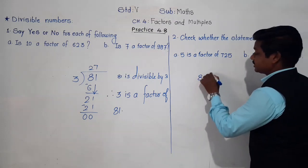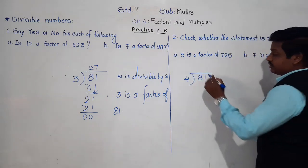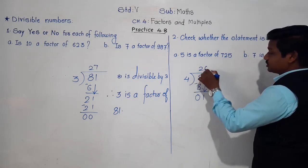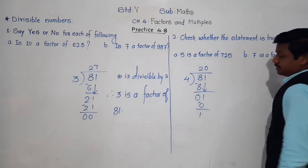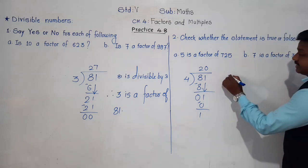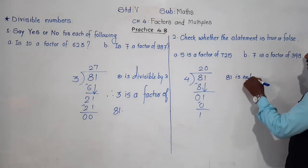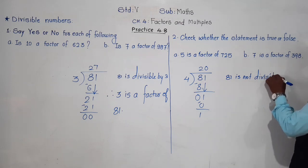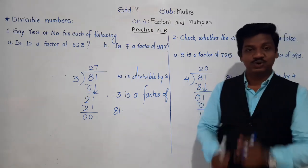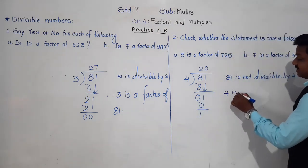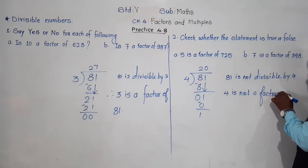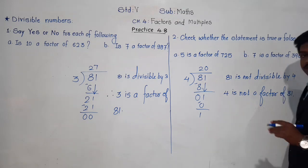Whereas suppose we take 81 divided by 4. 4 twos are 8, 8 minus 8 is 0, bring down 1. 4 zeros are 0, 1 minus 0 is 1. When we divide 81 by 4, we got remainder 1 — not 0. That means 81 is not divisible by 4. And since 81 is not divisible by 4, 4 is not a factor of 81.